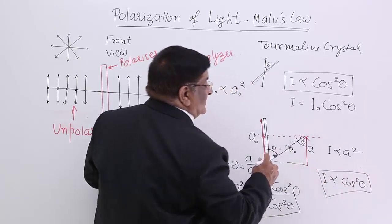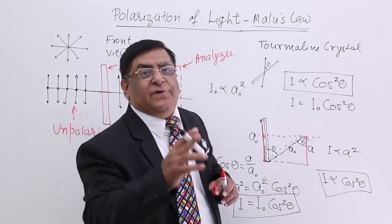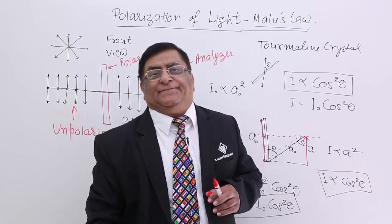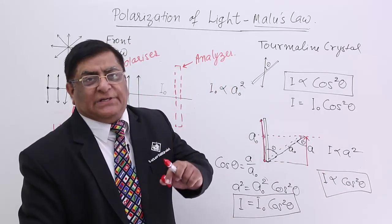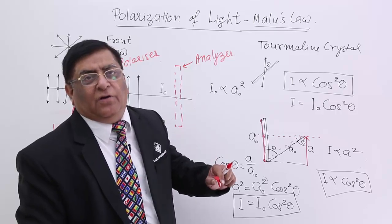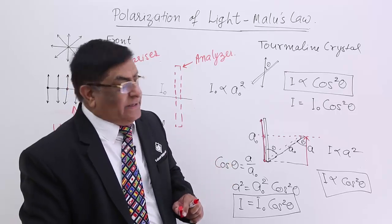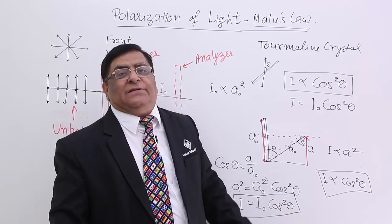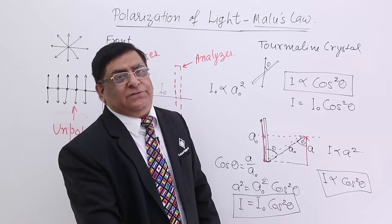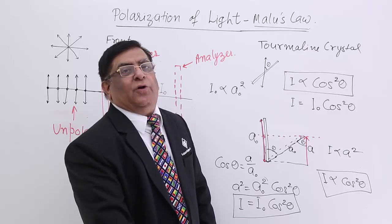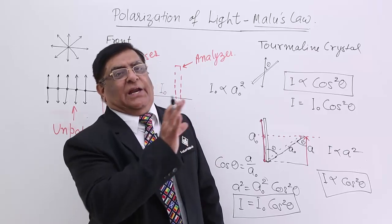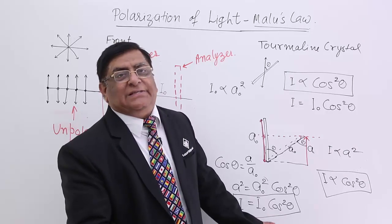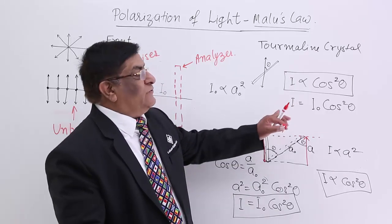Theta is the angle by which we are turning the analyzer. So if we turn it by a full 90 degrees, then cos 90° = 0, and we will not be able to see the light. This is Malus's law.